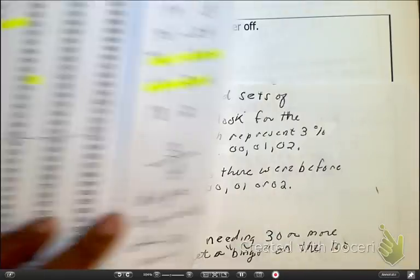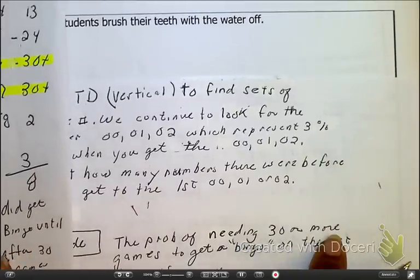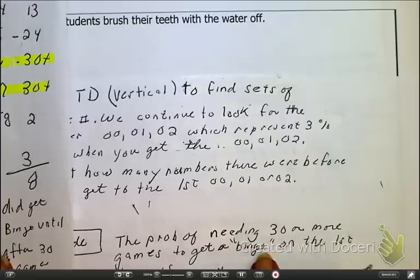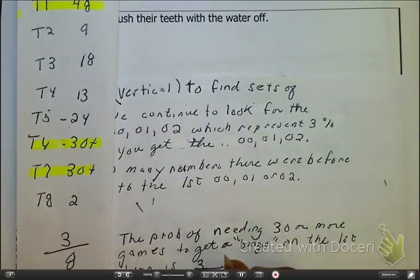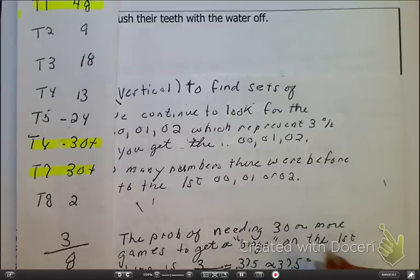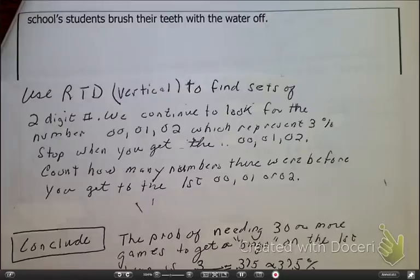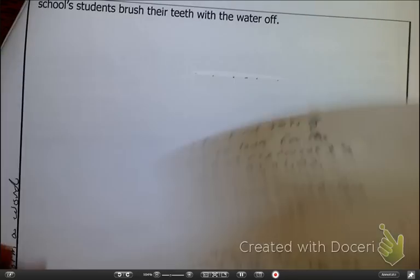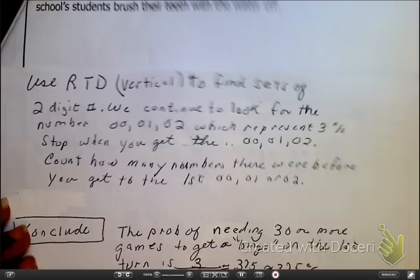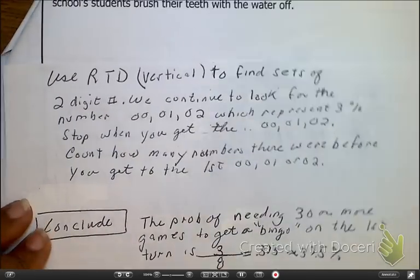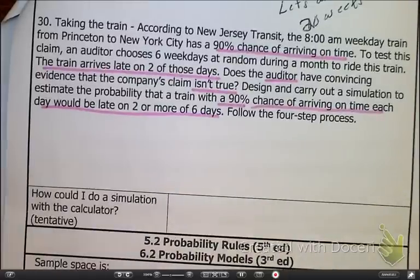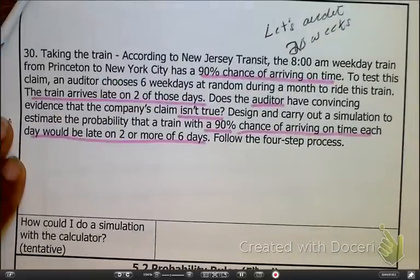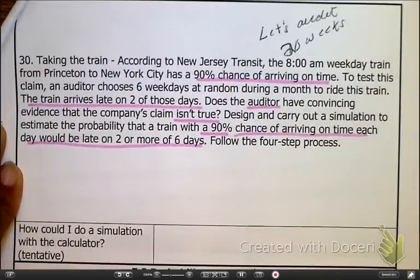But let's see what the conclusion is. The probability of needing 30 or more games to get a bingo on the first try would be our 3 out of our 8, which is 0.375. So approximately 37.5%. That's how this goes. Now I want to do problem 30 with you guys. So take a minute, look at the train situation. And as we look at that, we're going to be doing a simulation. We want to audit 20 weeks. So go ahead and read through it. Pause.